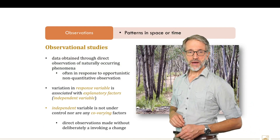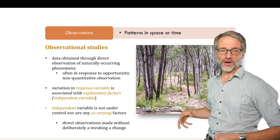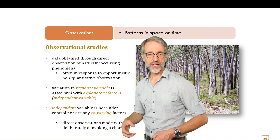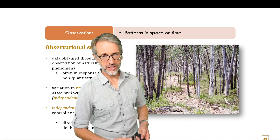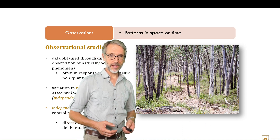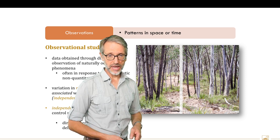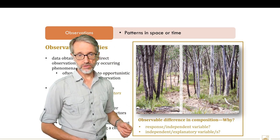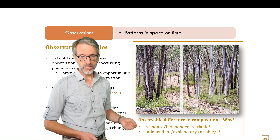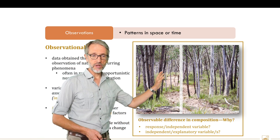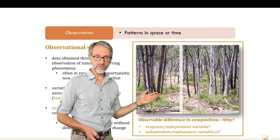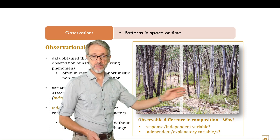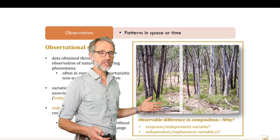Observational studies aren't just those in which we make observations in space and seek to identify changes or differences — we also try to associate them with explanations. One example is on Black Mountain, where we see a difference between aspects in terms of species composition, and we try to relate that observable difference to different aspects. We look for a response variable — the composition, the stems per hectare — and then an independent variable to explain it, perhaps the aspect that the trees are facing. So some of our studies are entirely observational in nature.